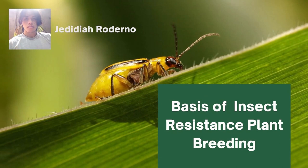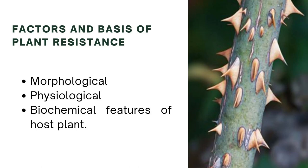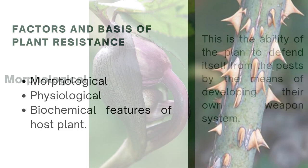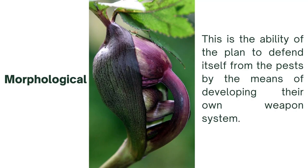The basis of insect resistance in plants involves morphological, physiological, and biochemical features of the host plant. In morphological resistance, this is the ability of the plant to develop its own defense mechanism against the pest. According to Stain, plants must assume the forms that allow certain metabolic functions to take place, including photosynthesis, in order to support growth.